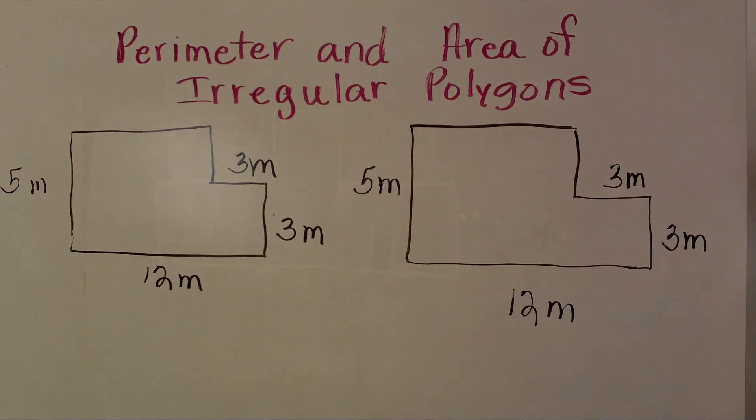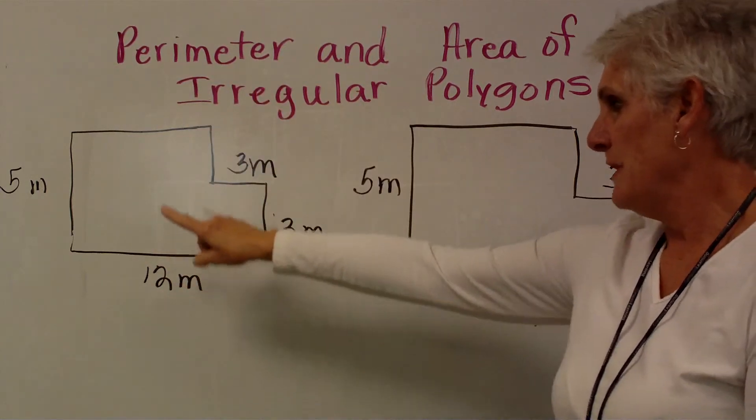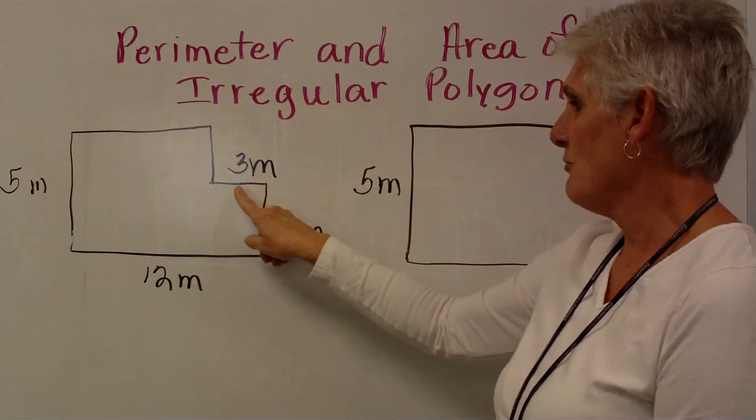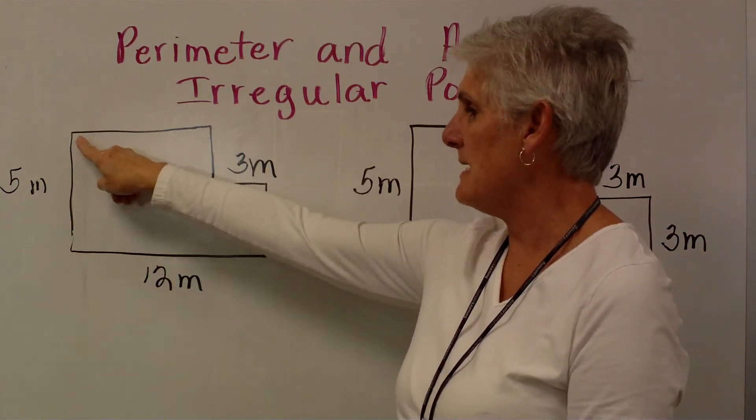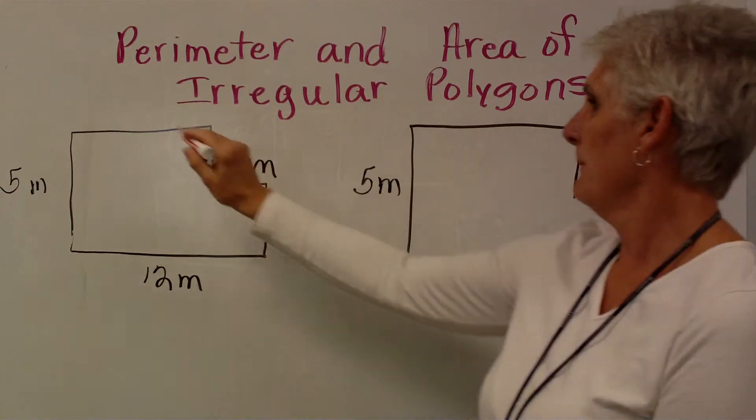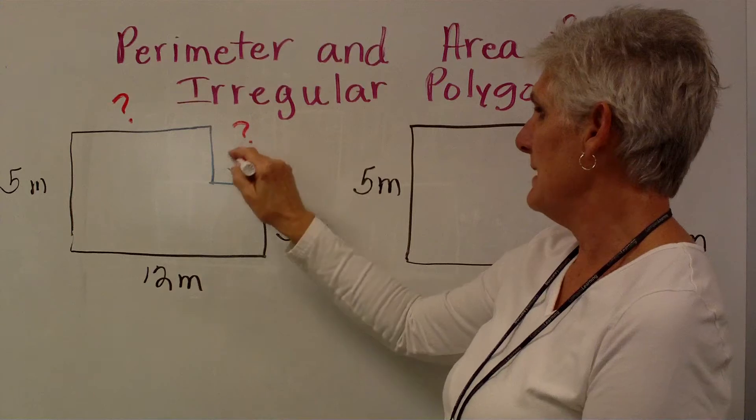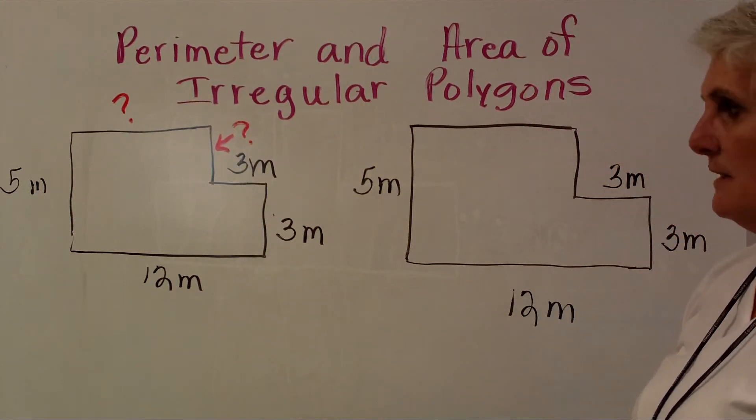So we're going to look at these shapes and notice that we have some missing information, and that is key to finding the perimeter. The children need to put their finger at the corner and go around every turn, as if they were driving a car, and count the number of turns that they make. When they do that, they realize, I have some missing information. I have a number missing here, and I also have a number missing on this line right there. How am I going to find that number?